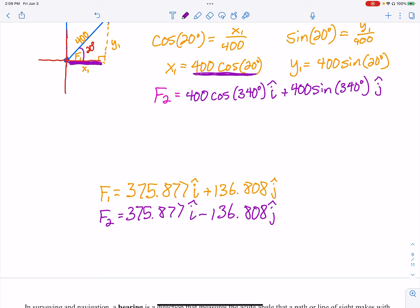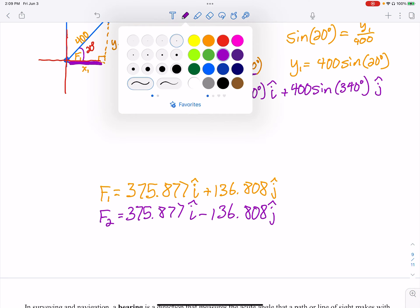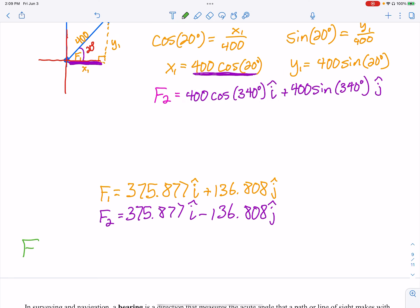Now, remember, we're trying to find F, the resultant force. F is equal to the first force plus the second force. So when I add vectors, remember, I add component-wise. So this tells me that I add the 375.877 with the other one, the I's. So I get 751.754 I. And then if I add the Y components, we get 0 J.